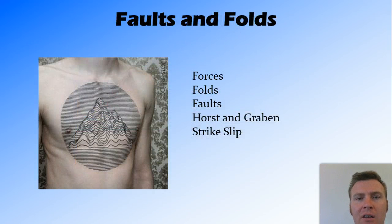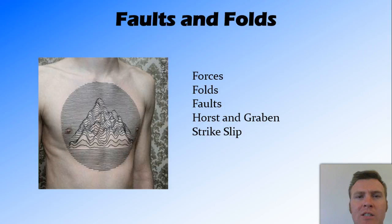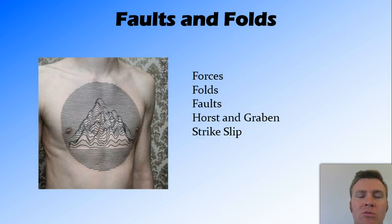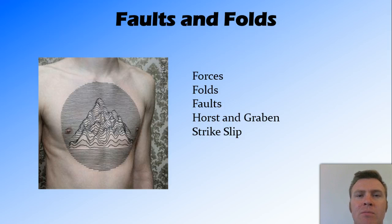In this video, we've looked at faults and folds. We've looked at the forces that occur in the strata of rocks — compression, tension, and shear force — which are the same as those that occur on the boundaries. We've looked at two types of folds caused by compression forces: the syncline and the anticline. We've looked at normal faults and reverse faults, as well as horst and graben, which occur from either multiple normal or multiple reverse faults. And finally, we looked at the strike-slip fault, where the two pieces of rock strata move sideways due to a shear force.